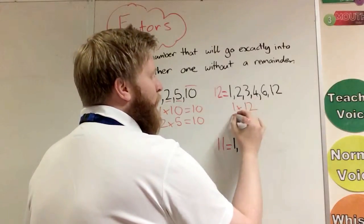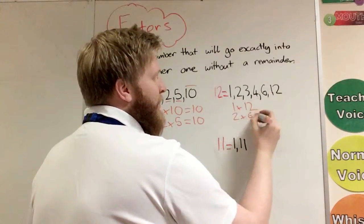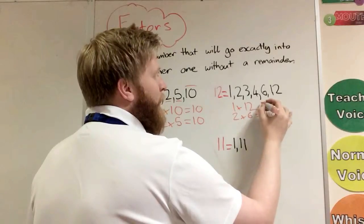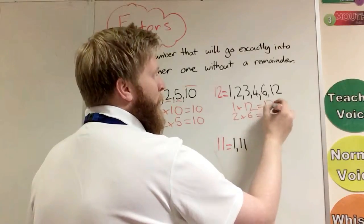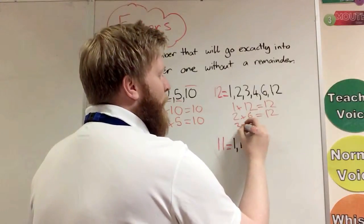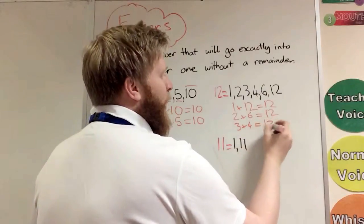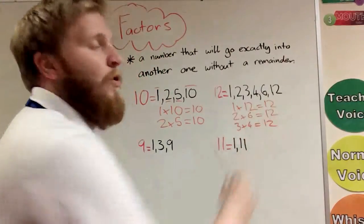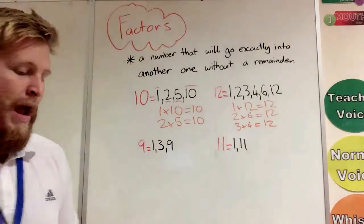And again, let's look at our factor pairs. We've got 1 times 12, we've got 2 times 6 that equals 12, and then we've got 3 times 4 that equals 12. So we know those are all factors because they go exactly in there.